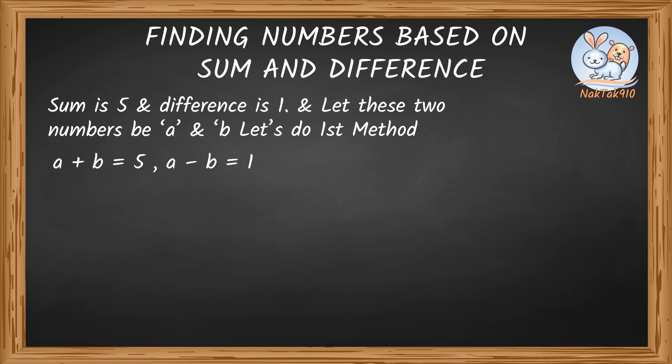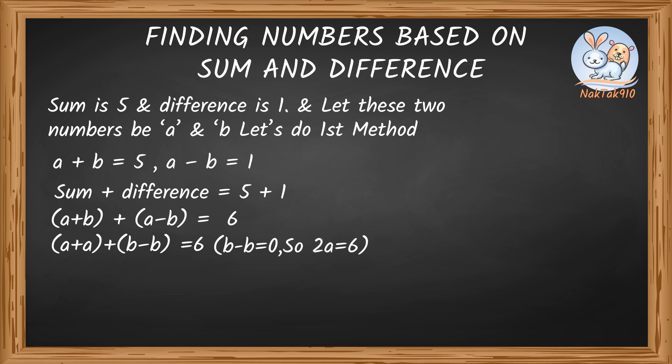Let's add both these equations together. Sum plus difference equals 5 plus 1. So a plus b plus a minus b gives us 6. Rearranging this gives us a plus a plus b minus b equals 6. b minus b is 0, so 2a equals 6.